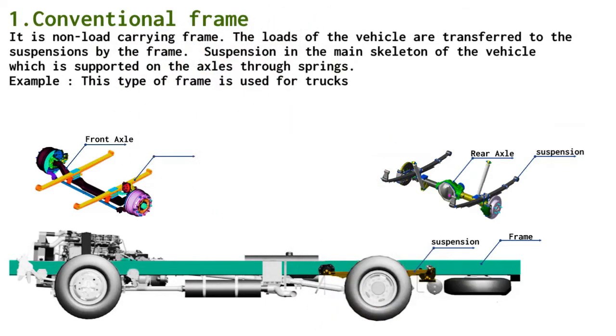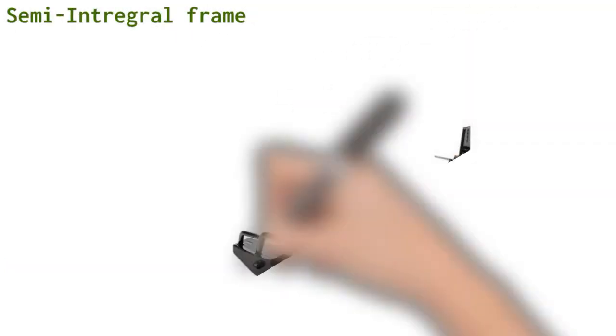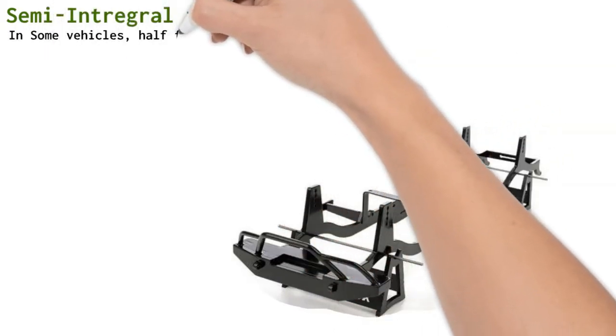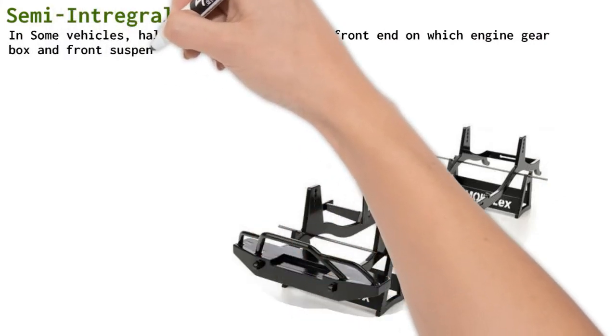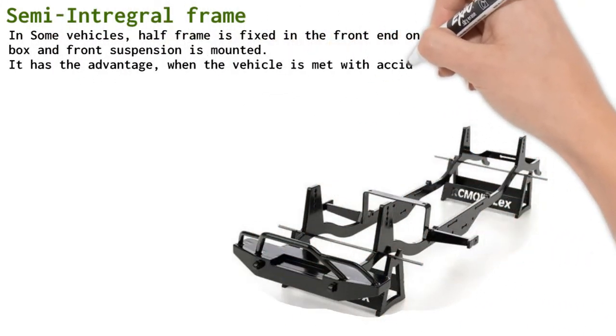Semi-integral frame. In some vehicles, half frame is fixed in the front end on which engine, gearbox and front suspension is mounted. It has the advantage that when the vehicle is met with an accident, the front frame can be taken out easily to replace the damaged chassis frame. This type of frame is used in some European and American cars.